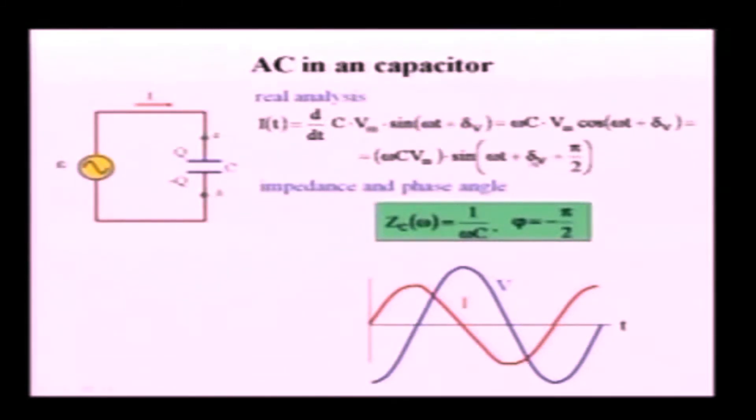So, we need to subtract delta V plus pi over 2. Well, delta V and delta V will cancel and we will be left with pi over 2. So, phase angle is minus pi over 2. Did I say pi over 2? I think so. So, phase angle is minus pi over 2 this time. Which means that the phase relationship is opposite to what happens in the inductor.